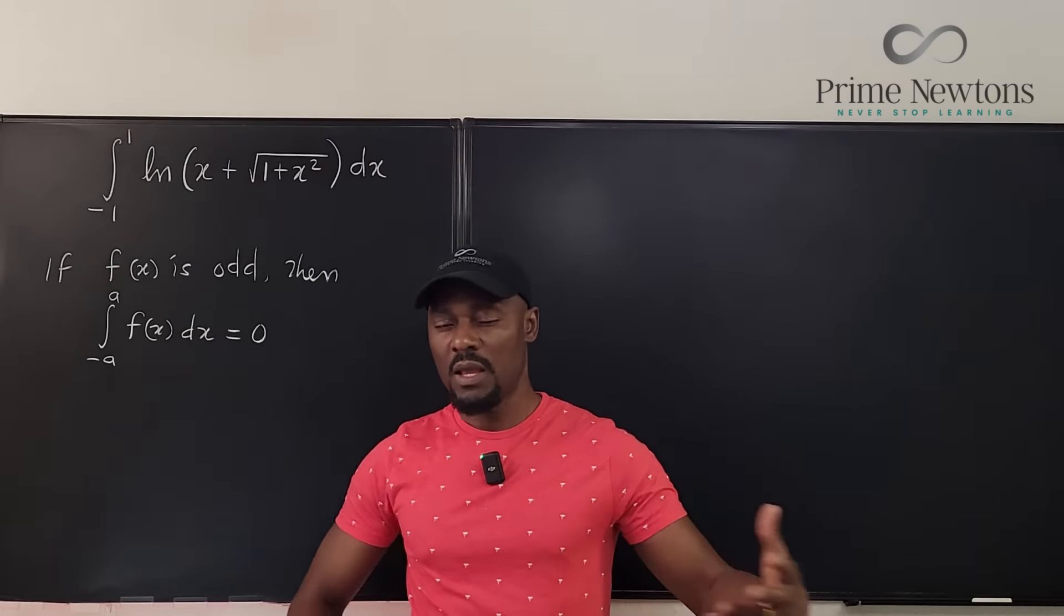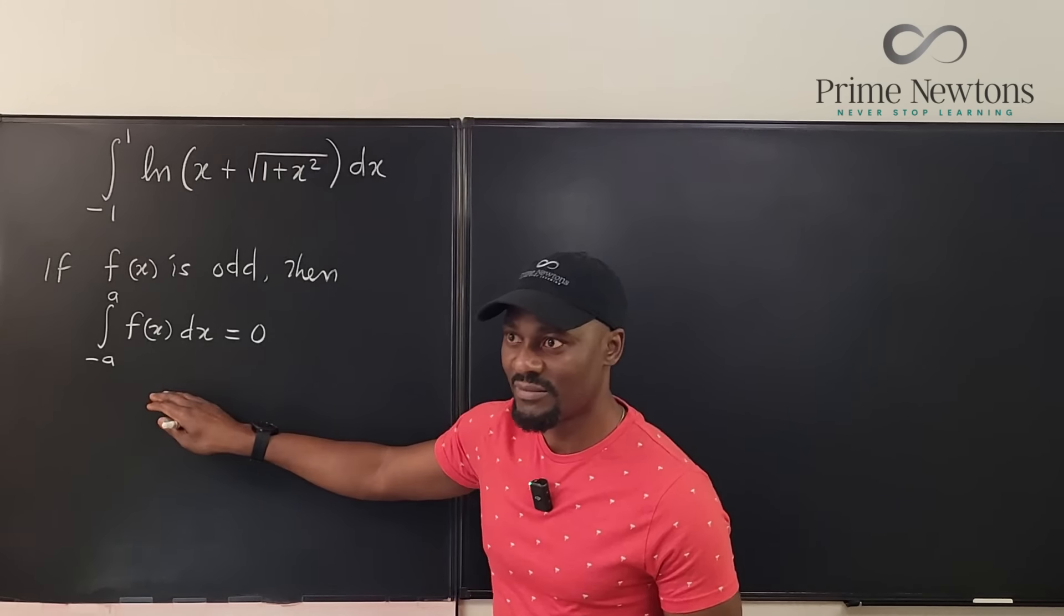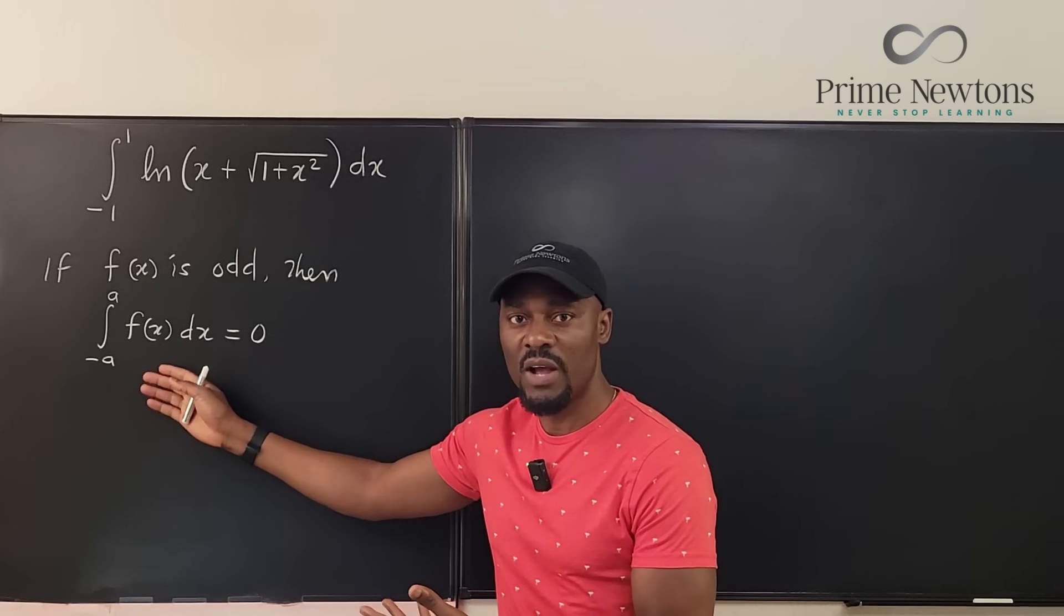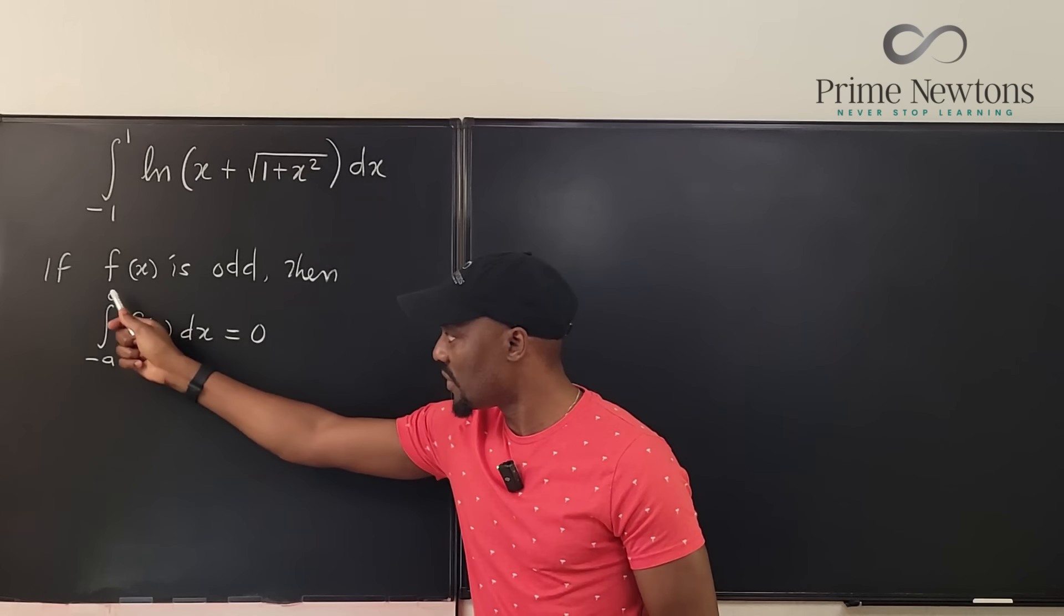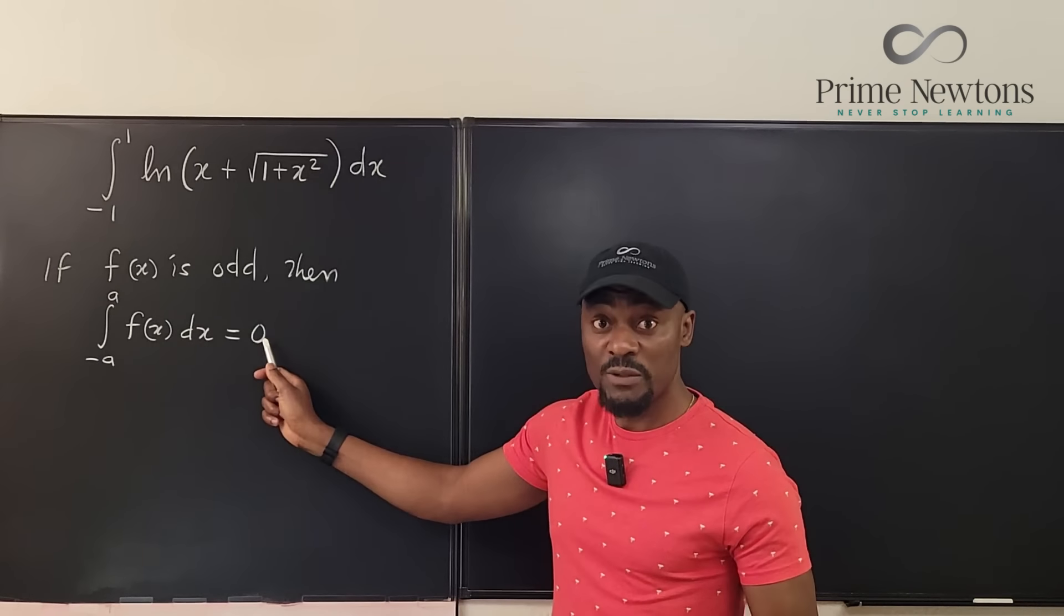You learned this in calc one at the very beginning of integration, that if you have an odd function and you're going from minus a to a, your answer will always be zero. We only need to show that this is an odd function.